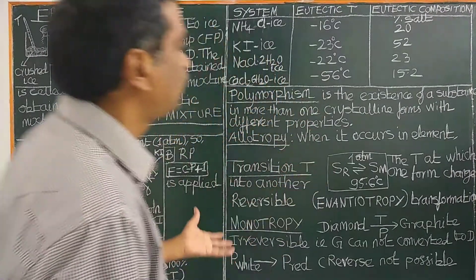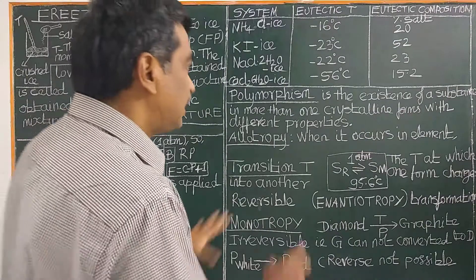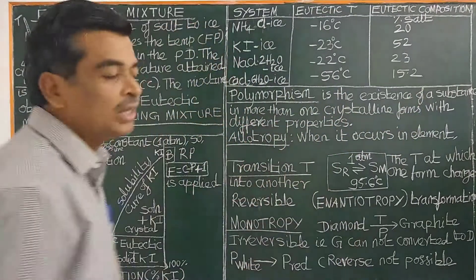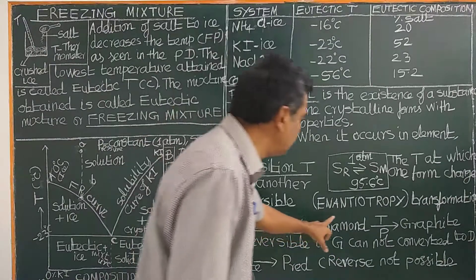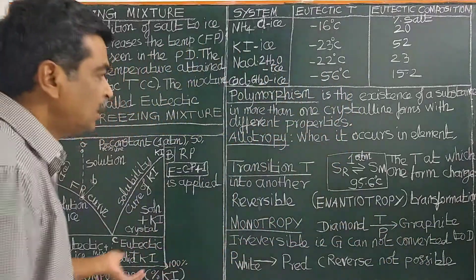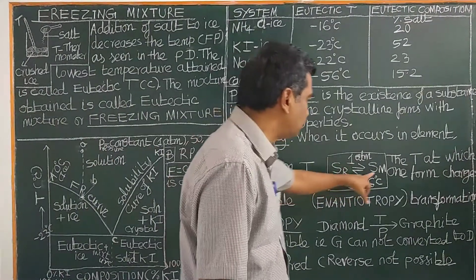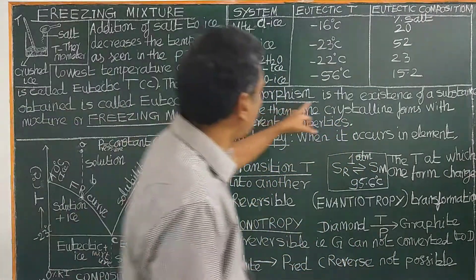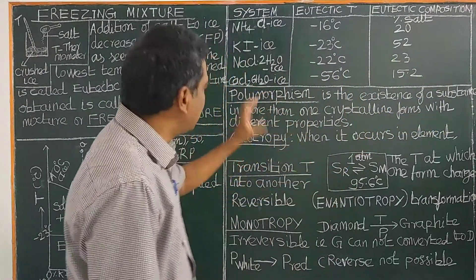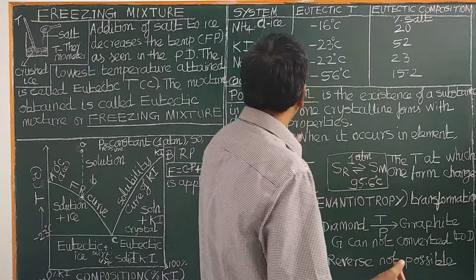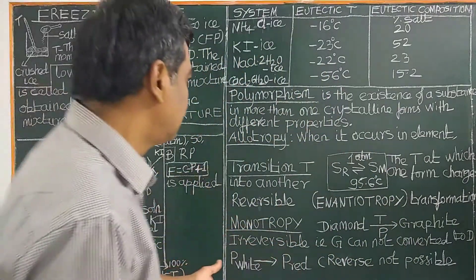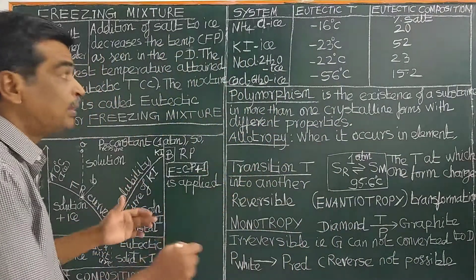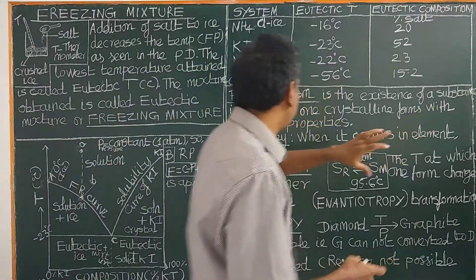What is polymorphism? It is a different topic. Polymorphism is the occurrence of a substance in more than one crystalline form. Diamond is one crystalline form; graphite is another. Sulfur rhombic is one crystalline form; sulfur monoclinic is another crystalline form. These different crystalline forms have different physical properties.